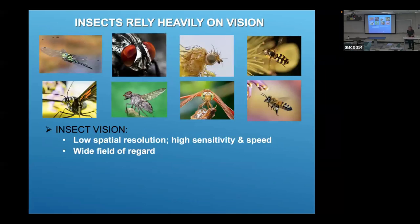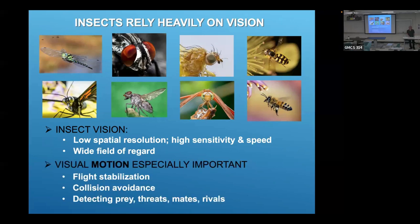Those animals are the insects. Insects, particularly flying insects, rely heavily on vision. Their vision has very low spatial resolution compared to vertebrates, but it's very sensitive and very fast. Everybody who's seen a compound eye on a bug knows they have a really wide field of view - they can see most of the visual sphere. Visual motion is especially important to flying insects. They use it for stabilizing flight, for avoiding collisions, and for detecting other insects.